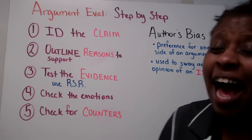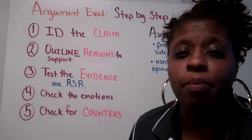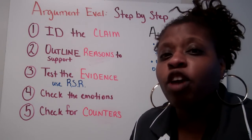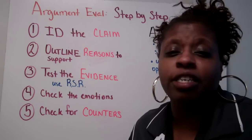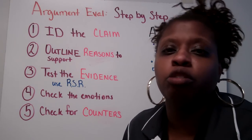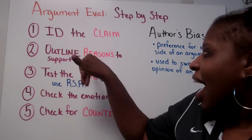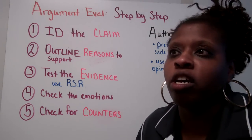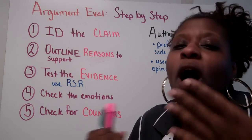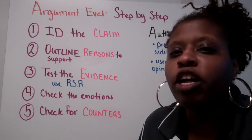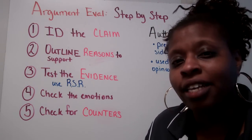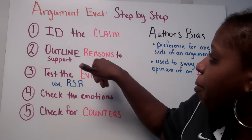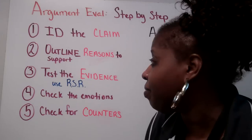Step 1: Identify the claim. The claim is the main point that the author is making regarding the issue they're talking about. Step 2: Outline the reason. The reason is going to be why they feel their claim is important — it's going to back up and support the claim.